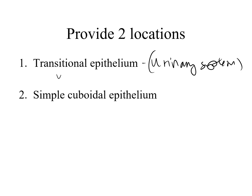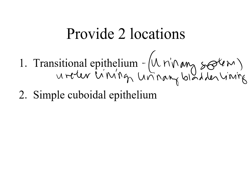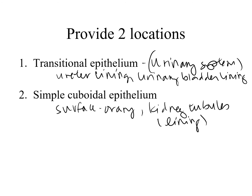Transitional epithelium lines the ureters and the urinary bladder. Simple cuboidal epithelial tissue is found on the surface of an ovary, lining kidney tubules, and making up many glands such as sweat glands. Flashcards are recommended for studying these tissue types.